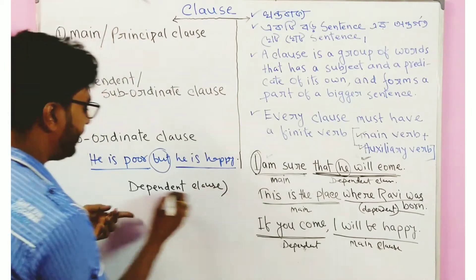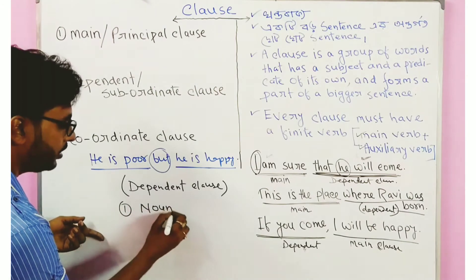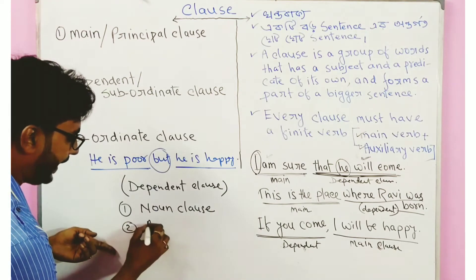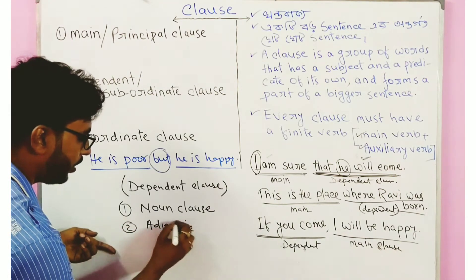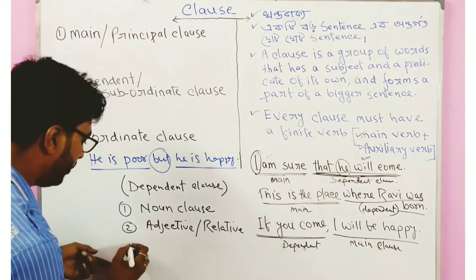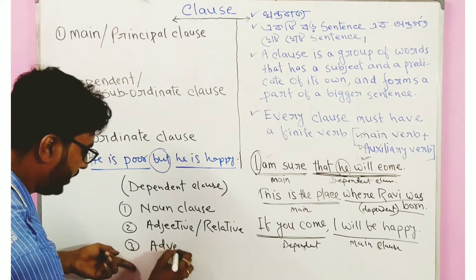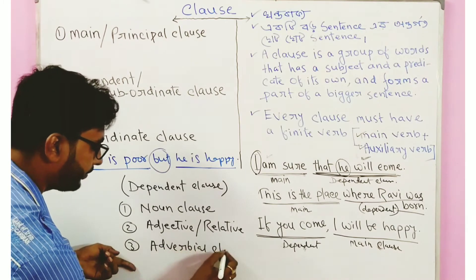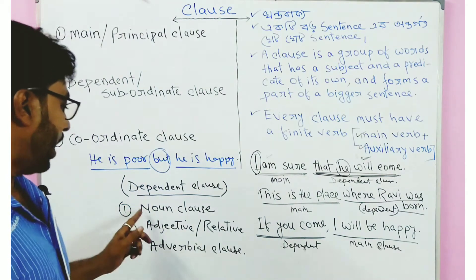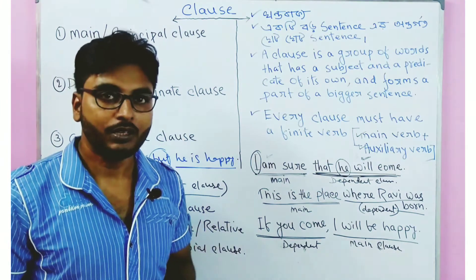Dependent clauses are further divided into three types: number one — noun clause, number two — adjective clause (also called relative clause), and number three — adverbial clause. Special videos will be uploaded for each of these.